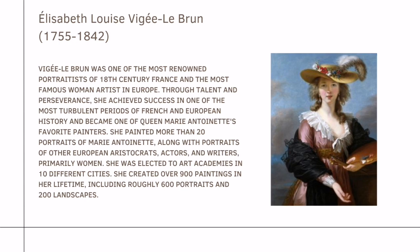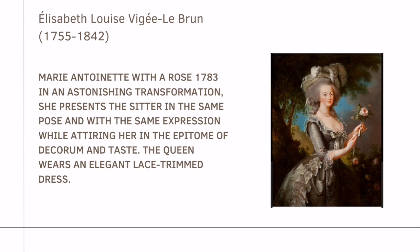Next is Élisabeth Louise Vigée Le Brun, one of the most renowned portrait painters of 18th-century France and the most famous women artists in Europe. Through talent and perseverance, she achieved success in one of the most turbulent periods of French and European history and became one of Queen Marie Antoinette's favorite painters. She painted more than 20 portraits of Marie Antoinette along with portraits of other European aristocrats, actors, and writers, primarily women. She was elected to art academies in 10 different cities and created over 900 paintings in her lifetime, including roughly 600 portraits and 200 landscapes. Her famous work is Marie Antoinette with a Rose, painted in 1783, presenting the sitter in the epitome of decorum and taste, wearing an elegant lace-trimmed dress.